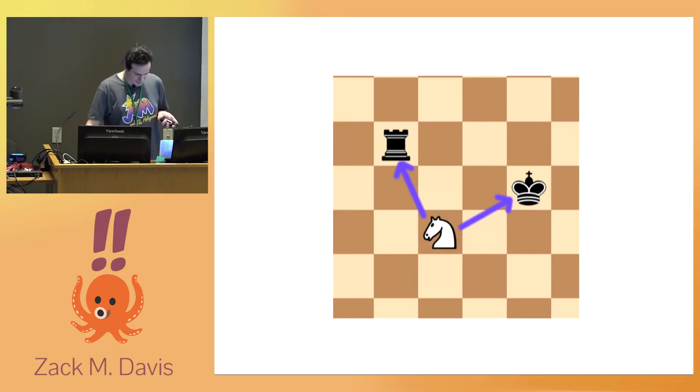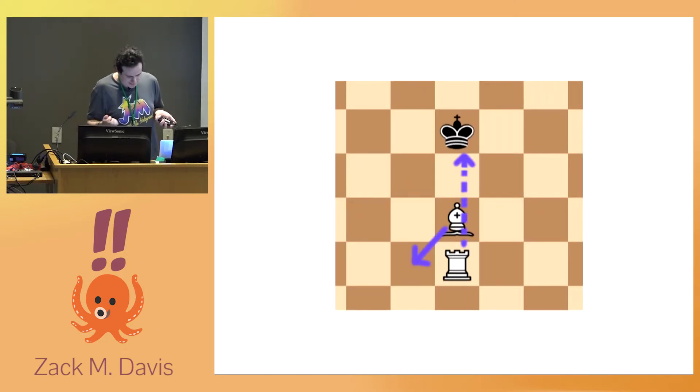For example, when a piece is in a position to attack more than one of the opposing pieces, we call that a fork. Or when one piece moves out of the way to reveal an attack by another that's hiding behind it, we call that a discovered attack.